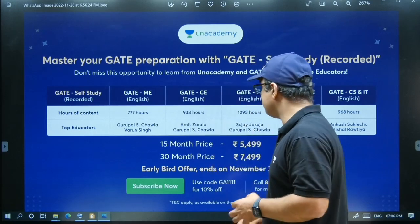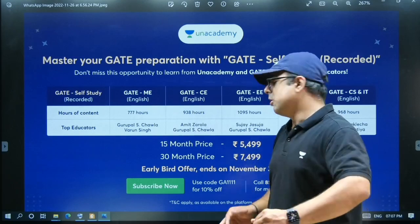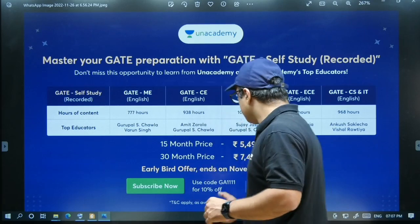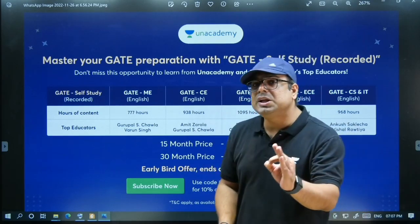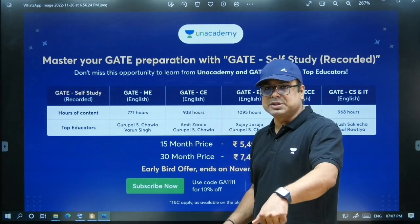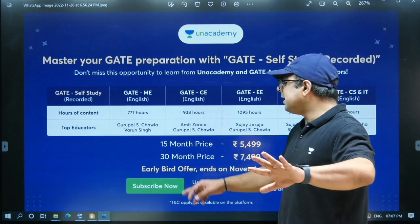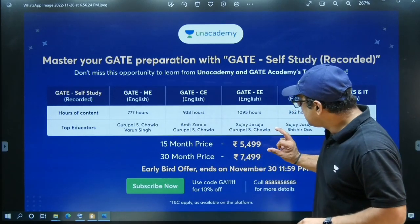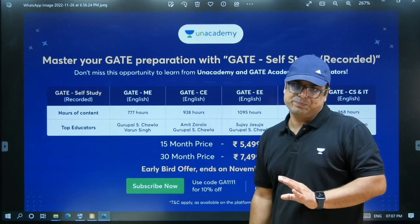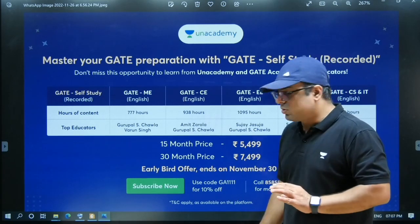Also, if you use the code GA1111, you will get another 10% off. But the important point is this is an early bird offer. This affordable pricing is available till 30th November only. So please keep this in mind and book your course before 30th November.